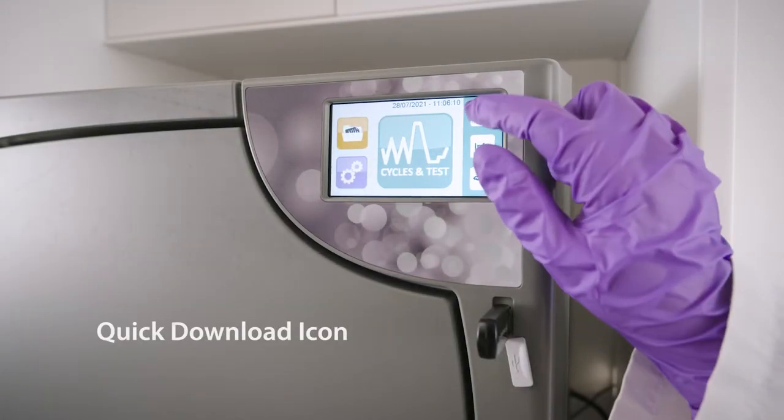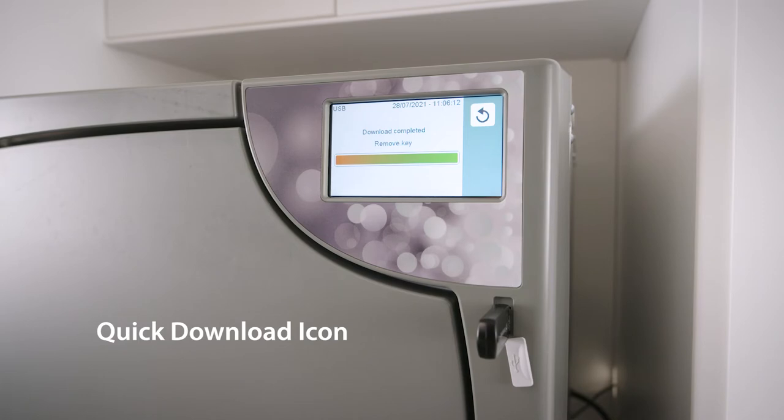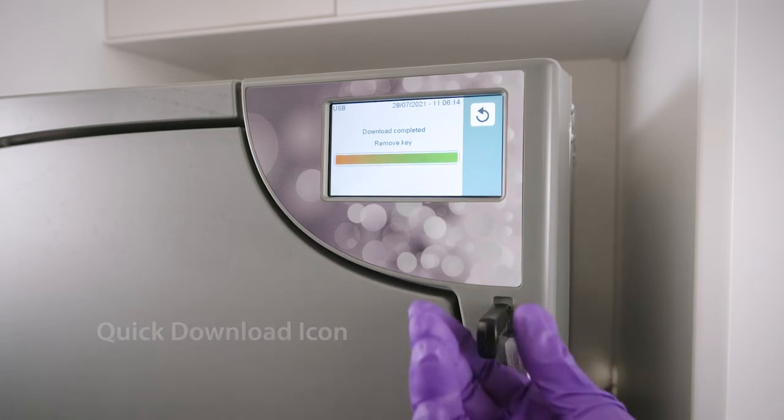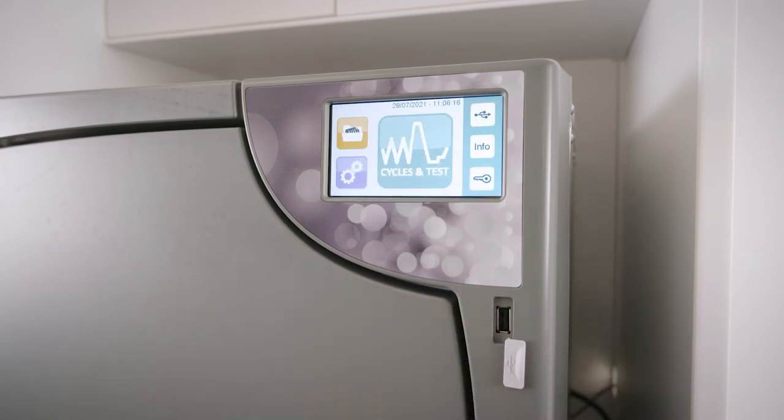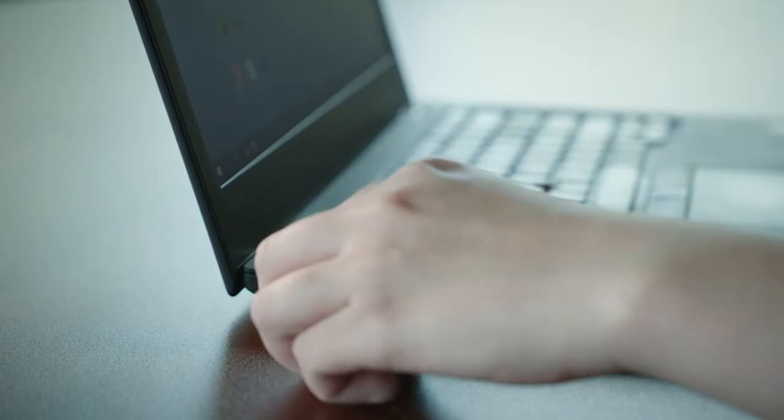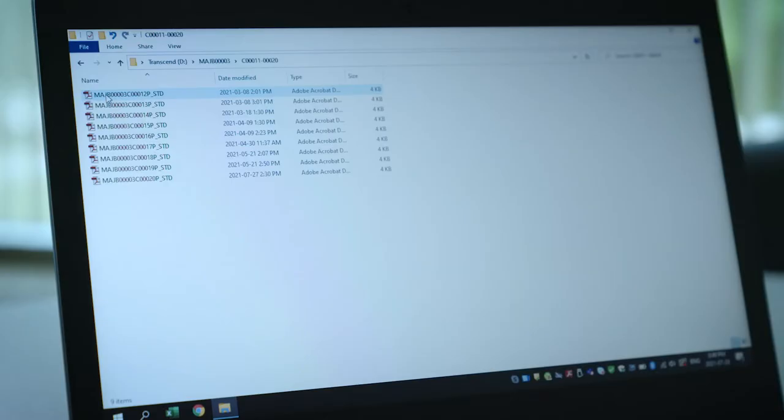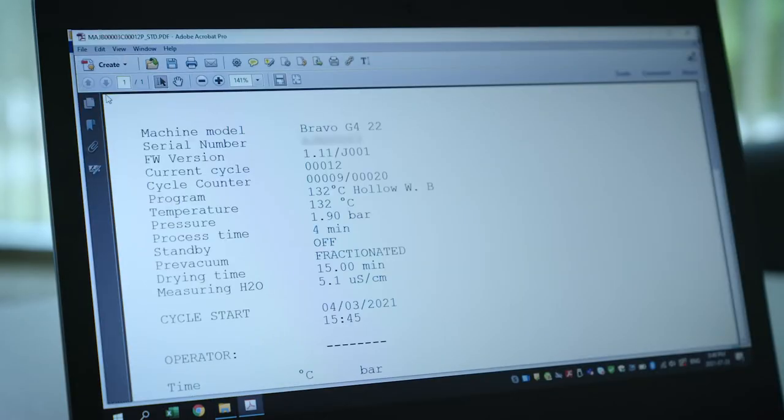The quick download icon is used to download the most recently unsaved cycles directly onto the USB key provided with the unit. This feature takes the guesswork out of data logging, ensuring that only the latest cycles that have not yet been transferred will be saved onto the USB key.